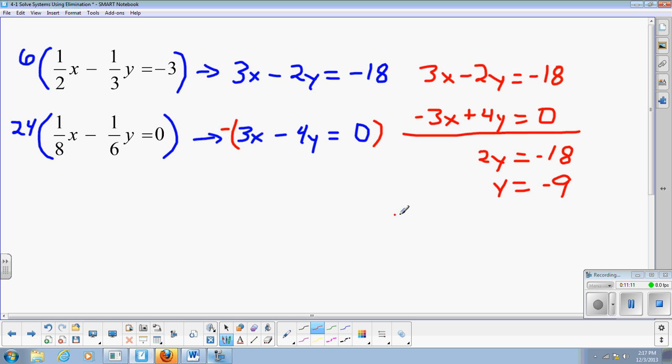y is negative 9. So let's find out. We say 3x minus 2 times negative 9 equals negative 18. 3x plus 18 equals negative 18. Subtract 18 from both sides. 3x equals negative 36. And x equals negative 12. So now my solution then would be negative 12 comma negative 9.